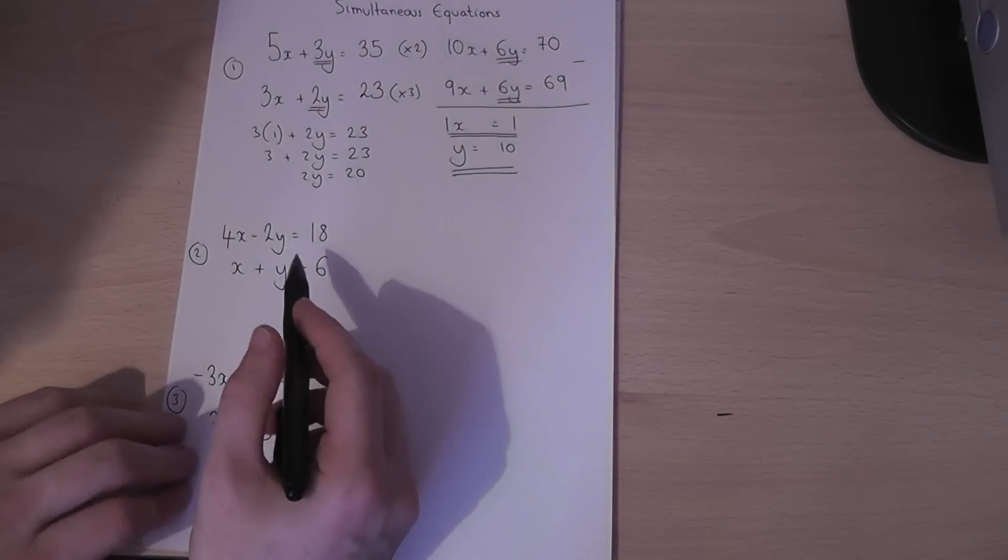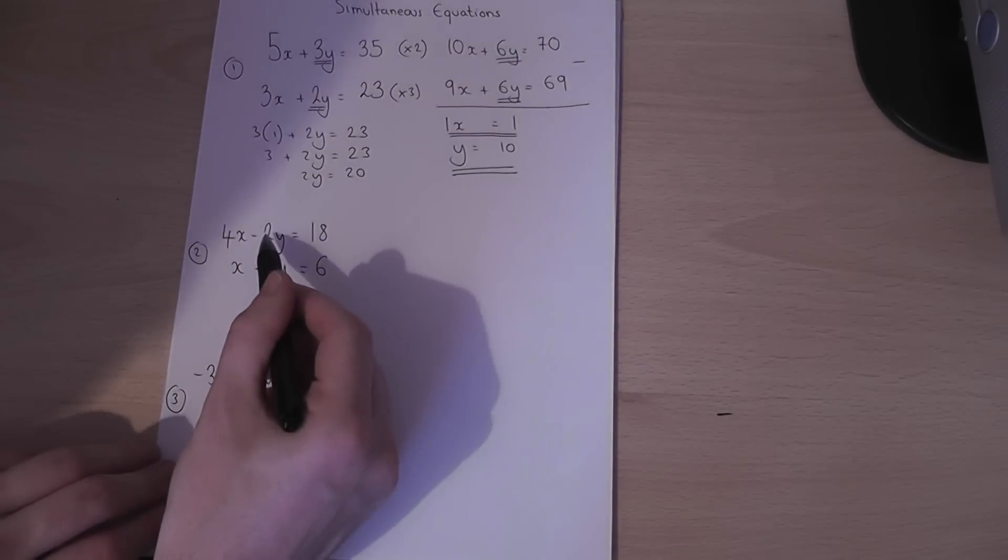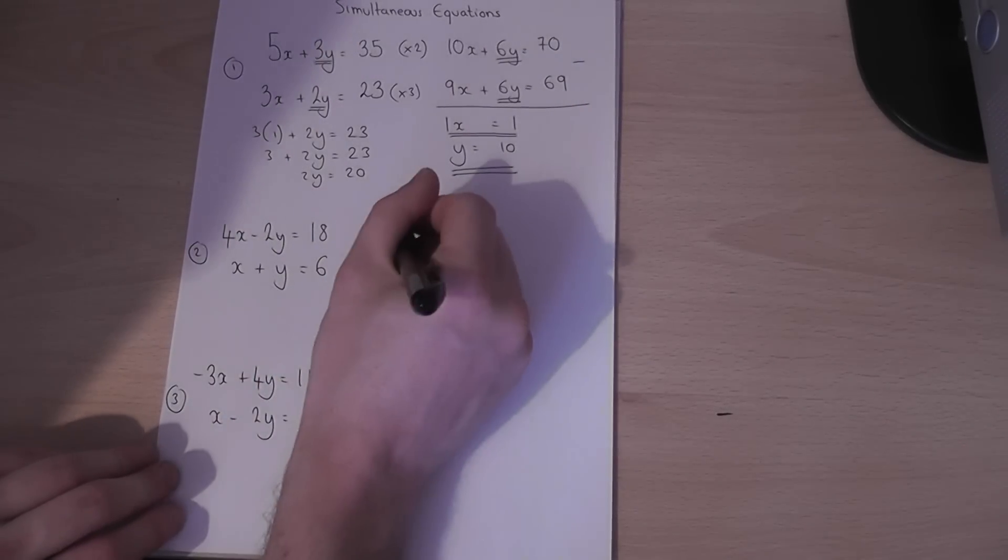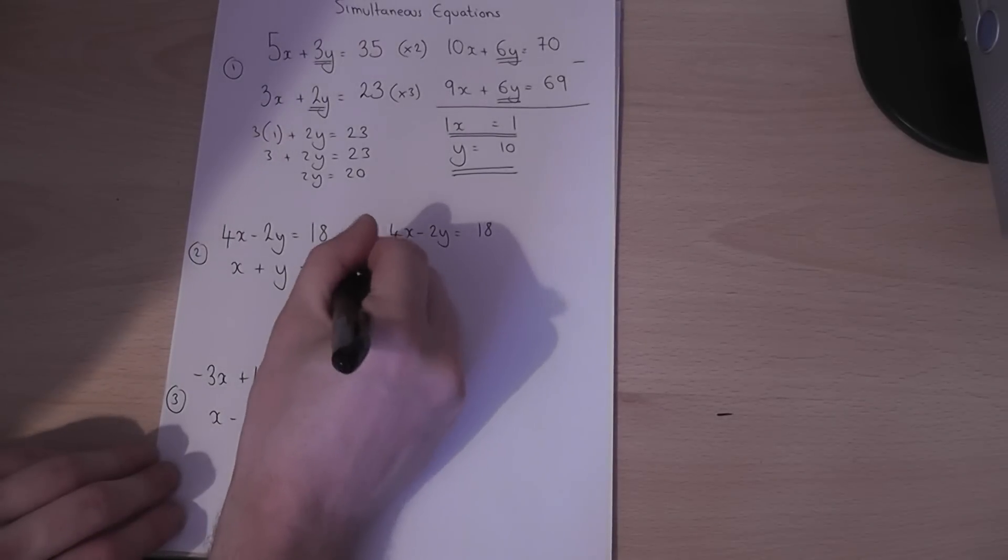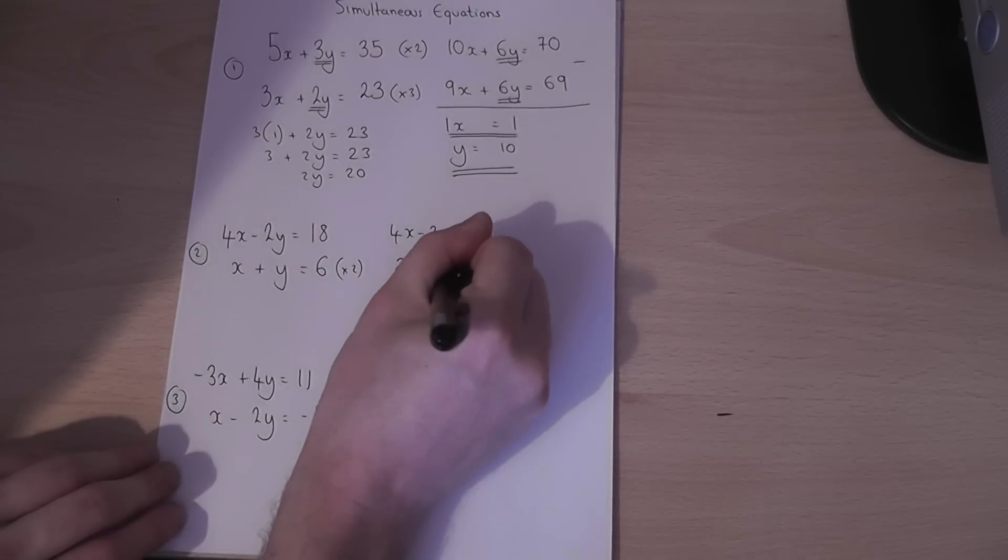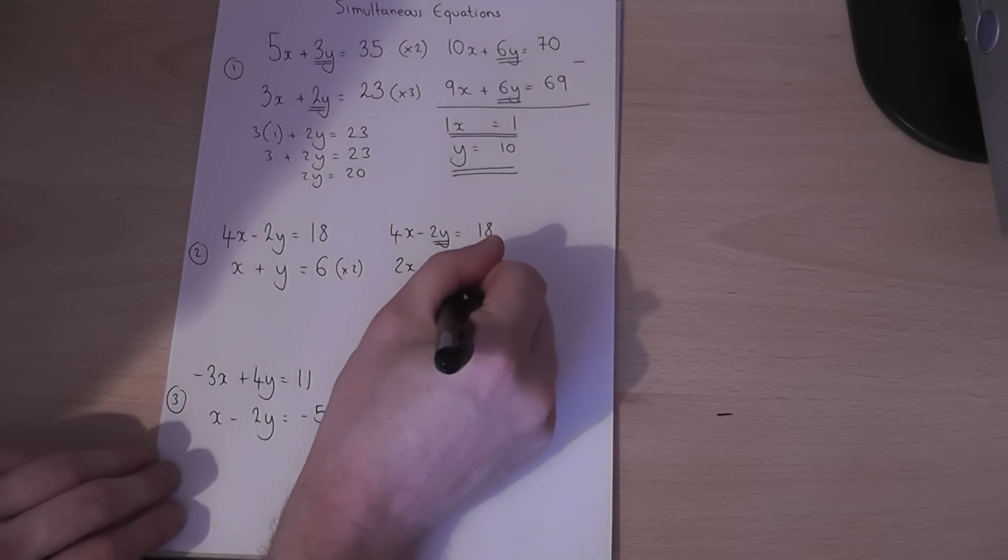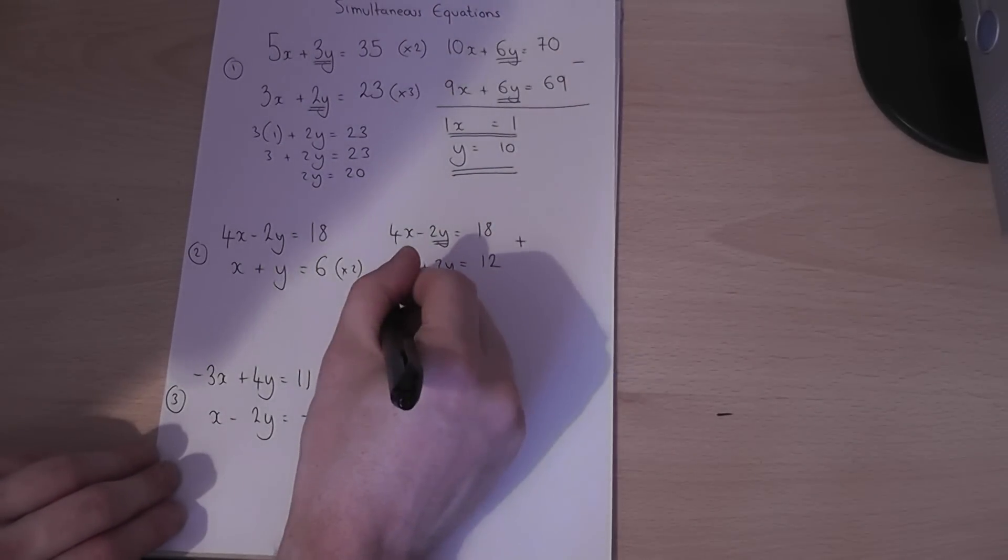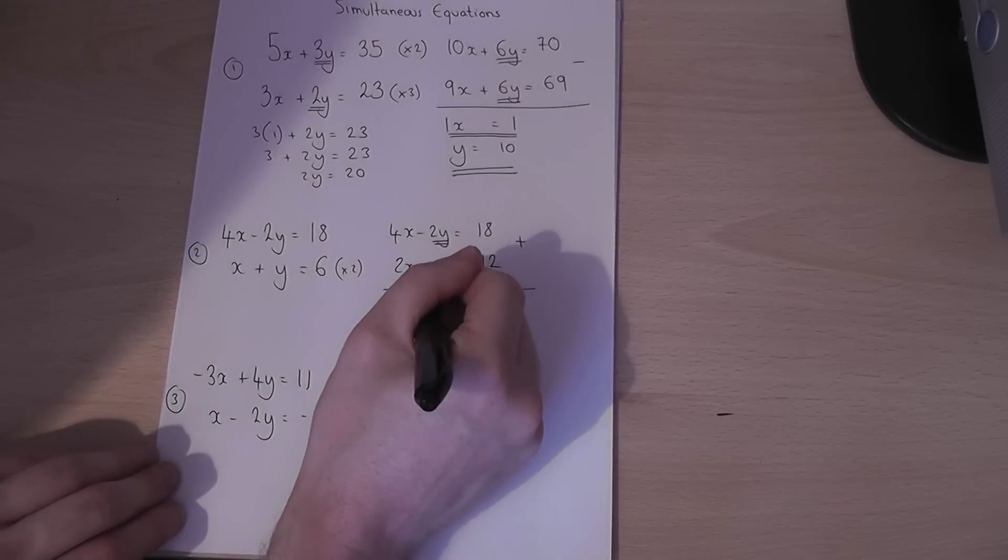In the second example, I know the signs are different but we approach it in the same way. I want to get the number of y's to be the same. If I merely double the bottom equation and keep this one the same, 2x plus 2y equals 12, we now have the same number of y's albeit with a different sign. To make different signs cancel out we just have to add the two equations together.